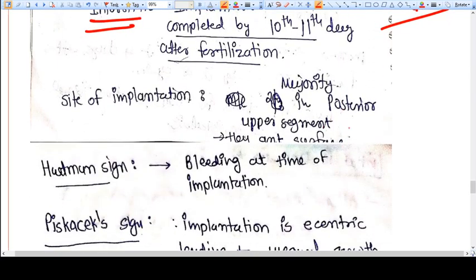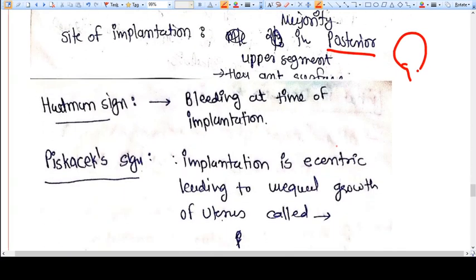What is the site of implantation? The majority is in the posterior upper segment of uterus, but it's not necessary - it's just the most common place. Whenever there is implantation, the blastocyst has to pierce the endometrium, and that's why some amount of bleeding occurs.